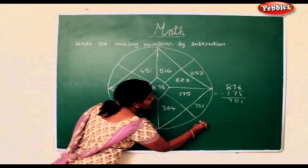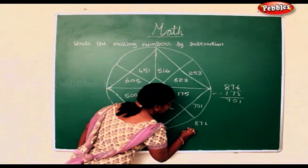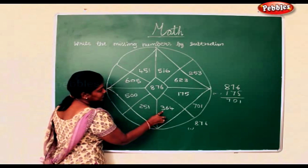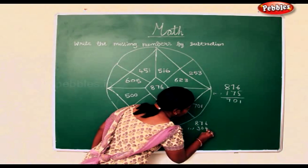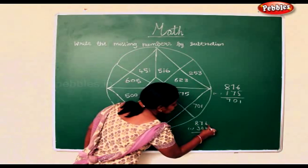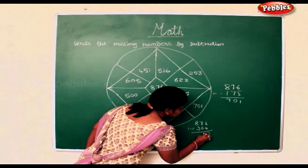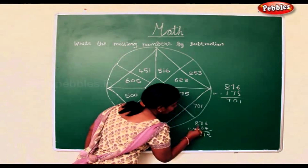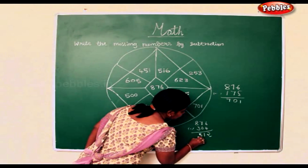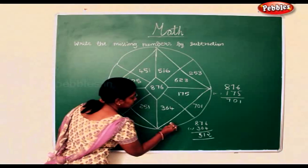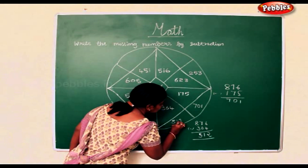Same way we are going to do this. 876 less 364. Now 6 take away 4 is 2. 7 take away 6 is 1. 8 take away 3 is 5. So the missing number here is 512.